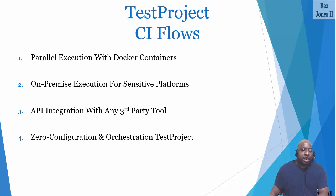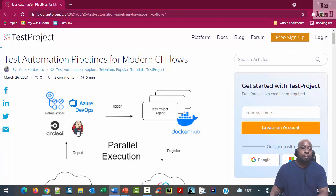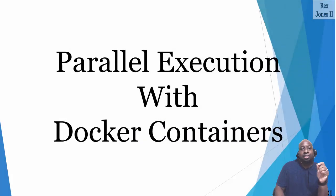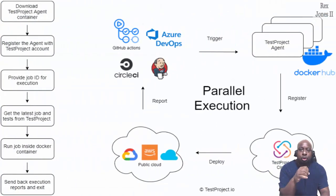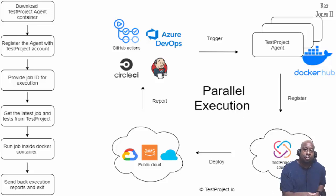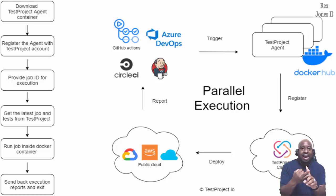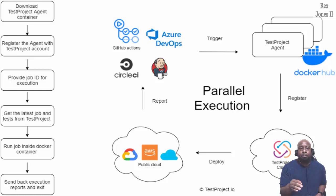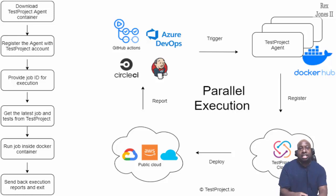You can find more information from Mark's article called 'Test Automation Pipelines for Modern CI Flows.' The first practice is parallel execution with Docker containers. Parallel execution is a process to reduce execution time and provide fast results. A Docker container is software that contains code and everything that depends on the code. It helps the application run securely regardless of the environment by including system tools, system libraries, and settings. This diagram illustrates parallel execution with Docker containers. The agent for TestProject is downloaded with Selenium and Appium drivers, plus it has built-in capabilities for reporting.